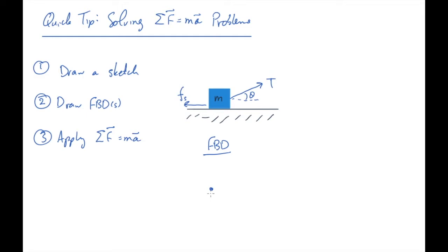First, we notice that there is weight acting on it. That is always straight down. There's a normal force from the surface that it's resting on. That is perpendicular to the surface. There's the tension force at the angle theta. And there's friction in this direction.